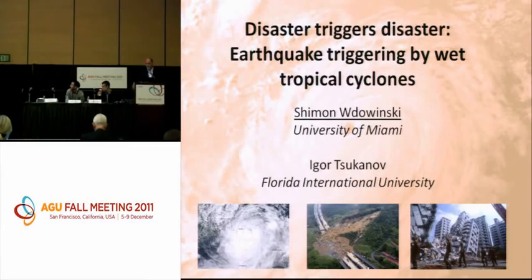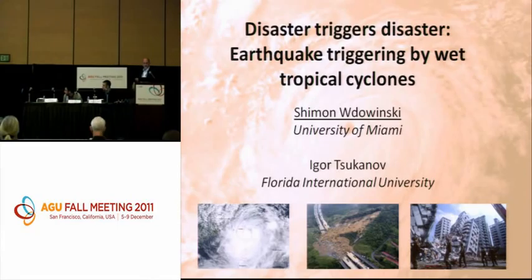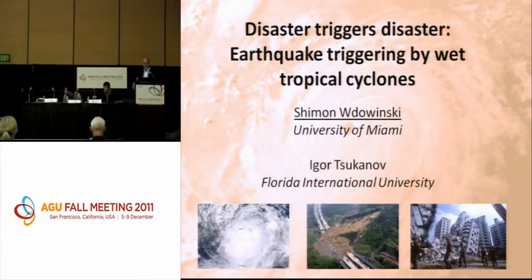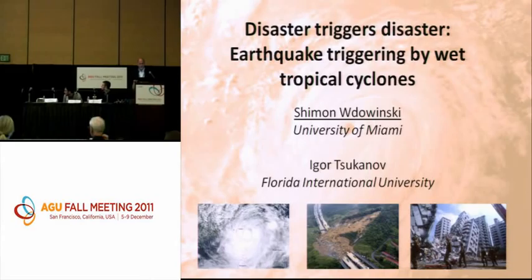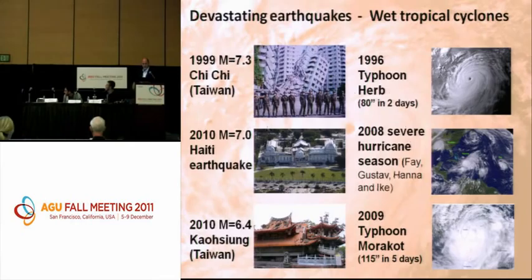Good morning. My name is Shimon Wadovinsky, from the University of Miami. I'll present a brief summary of our study with my colleague Igor Tsukanov from Florida International University, showing that very wet tropical cyclones — a generic name for hurricanes, typhoons, and cyclones — can trigger earthquakes. That's why it's called disaster trigger disaster: the cyclone itself is a disaster, causing flooding and landslides, and then earthquakes come. Copies of these presentations and a press release are available at the back of the room.